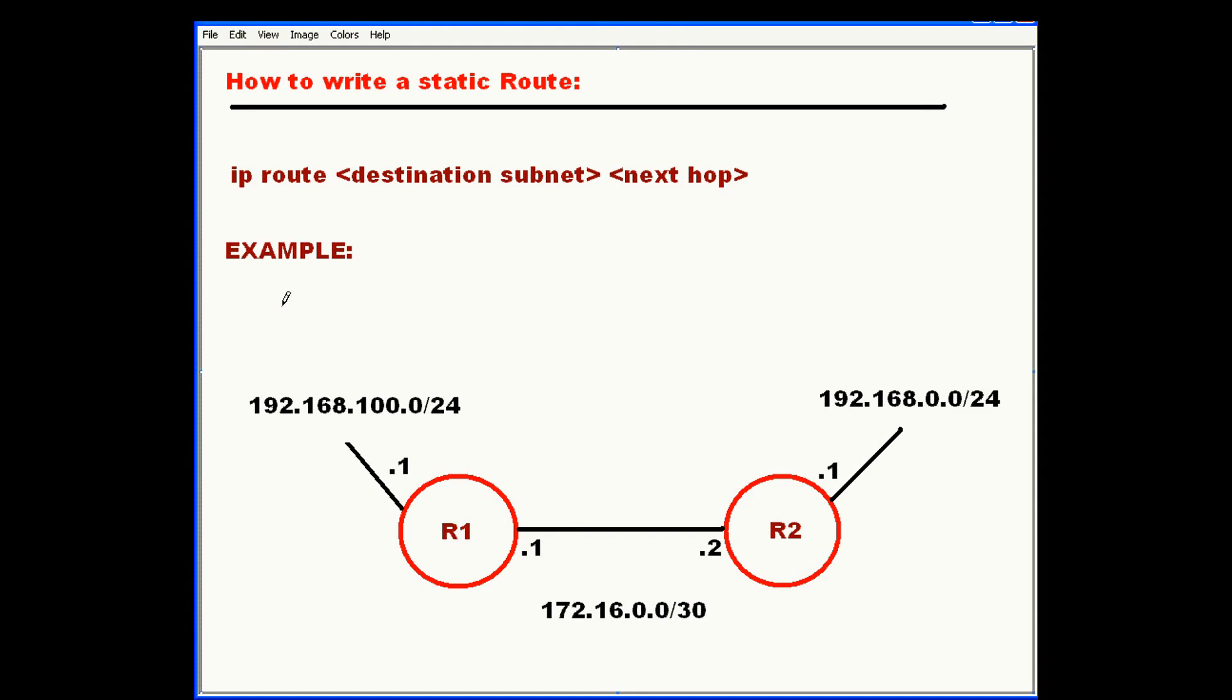So what would happen if a packet came in from this side of the router destined for this subnet? 192.168.0.0/24. Since this router is not directly connected to this subnet, it's going to drop that packet.